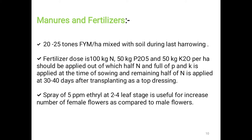Application of 20 to 25 tons of FYM per hectare is recommended during the last harrowing. Fertilizer dose is 100 kg nitrogen, 50 kg phosphorus and 50 kg potash per hectare. Half of the nitrogen and full phosphorus and potash are applied at sowing; remaining nitrogen is applied as top dressing 30 to 40 days after transplanting. Spray of 5 ppm ethereal at 2–4 leaf stage is useful for increasing the number of female flowers.